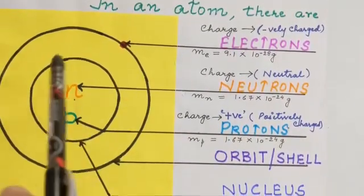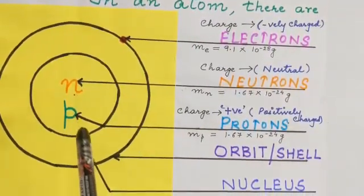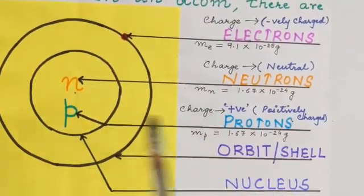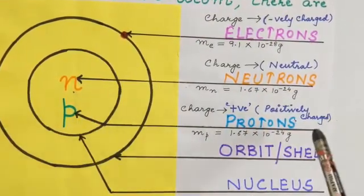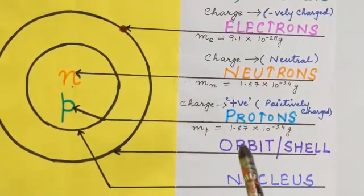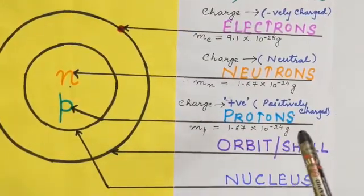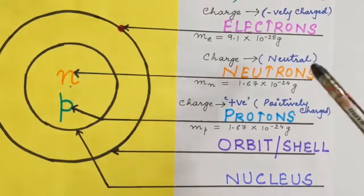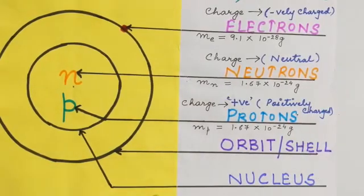Protons are also present inside the nucleus. They are subatomic particles present in the nucleus of an atom carrying a positive charge. They have a mass of 1.67 into 10 to the power of minus 24 grams. So protons and neutrons both have the same mass.